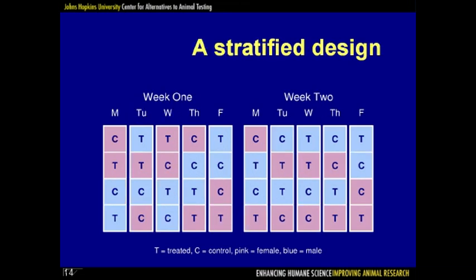This leads us to the concept of stratification. In this design, each day there are two male mice — one treated and one not — and two female mice — one treated and one not. Only the particular individuals and the order in which they are considered is randomized. The key here is that if there is any variation between males and females, or across the course of the experiment, we can account for that and even learn about it. This gives more precise results, so we may be able to get by with fewer animals.